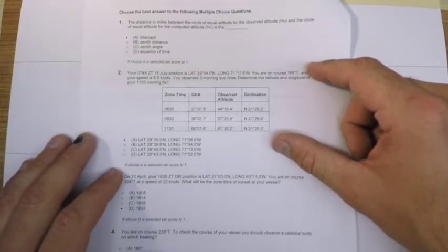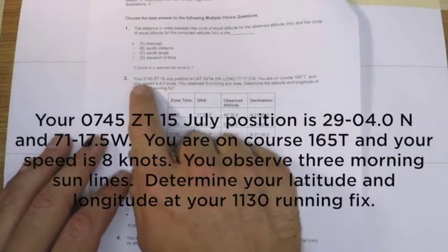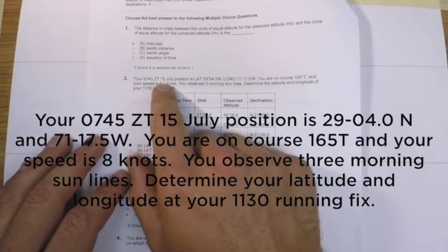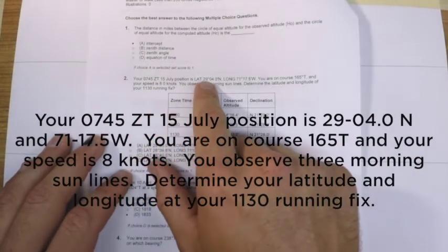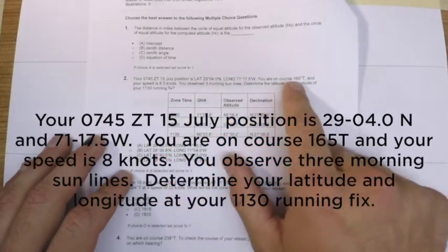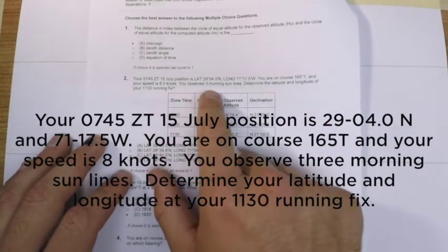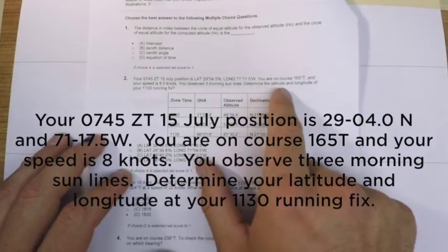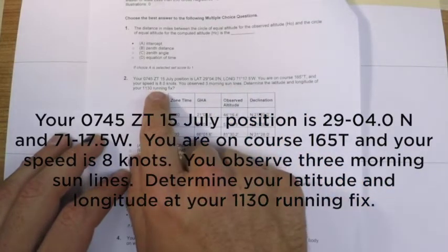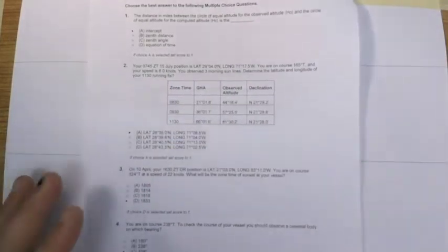So the question reads: at 0745 on 15 July our position is latitude and longitude, we're on a southeasterly course at a speed of eight knots, and we observed three morning sunlines and they're asking for the latitude and longitude of our running fix. The nice thing about the problem in this case is that the Coast Guard has provided a lot of good information.